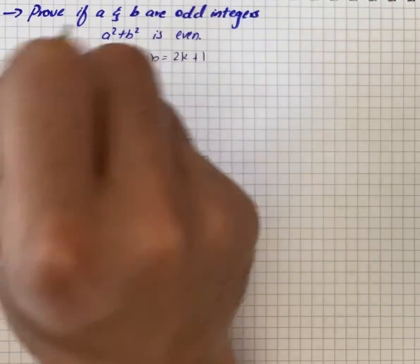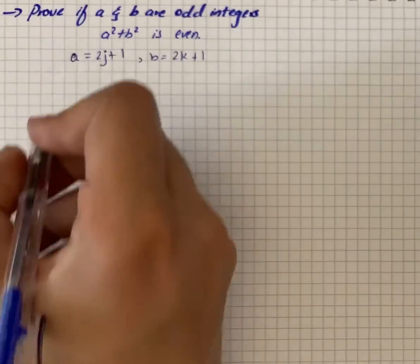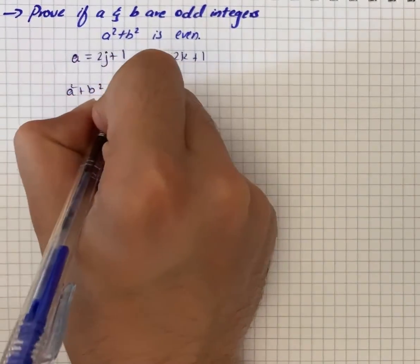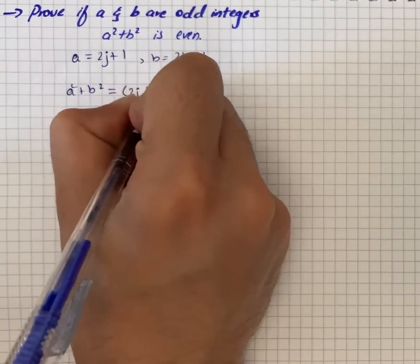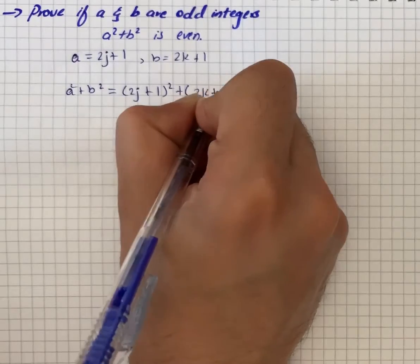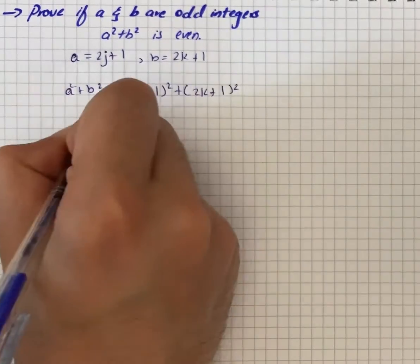Where j and k are integers, so we can write that a² + b² = (2j + 1)² + (2k + 1)². Now we will open up the formula.